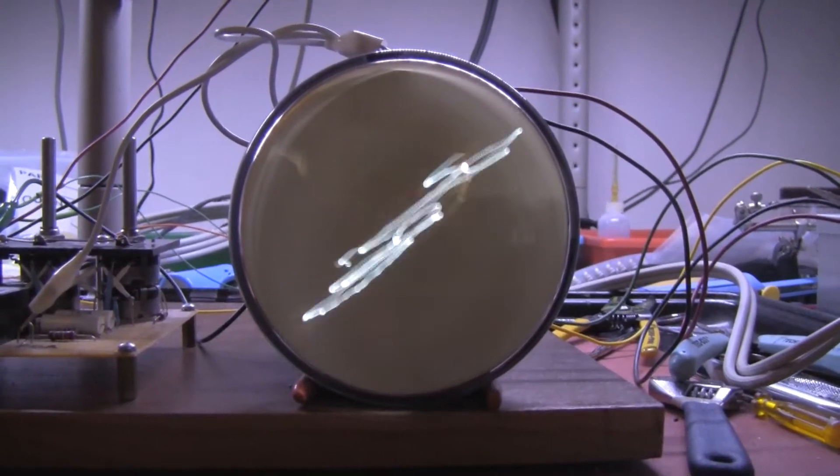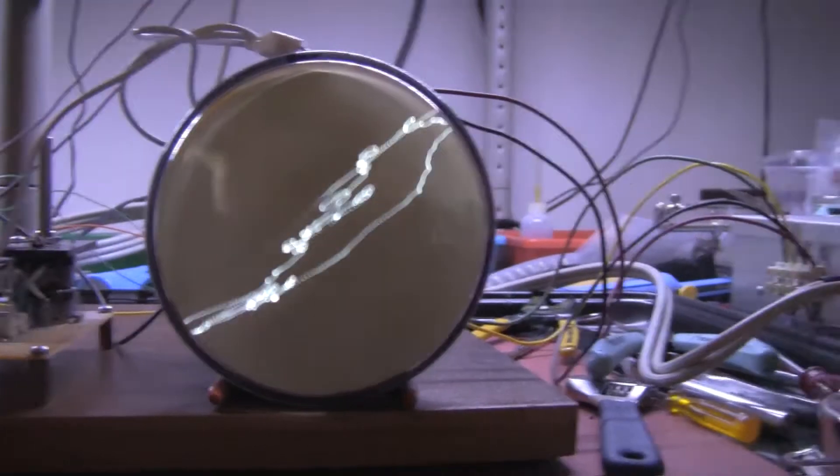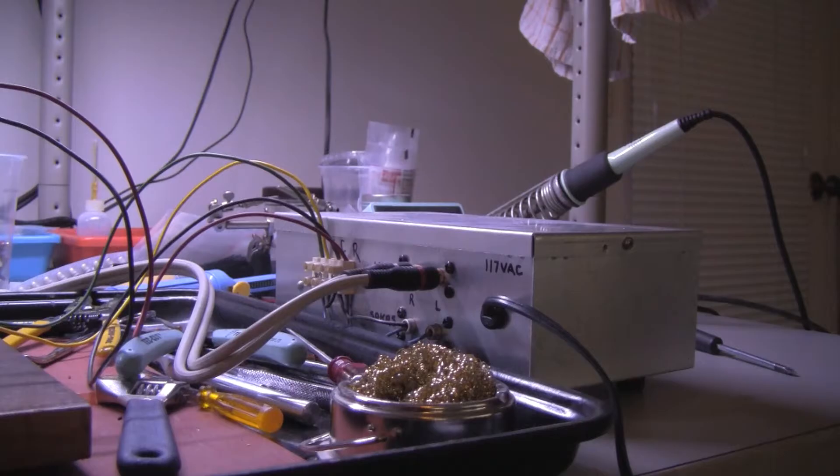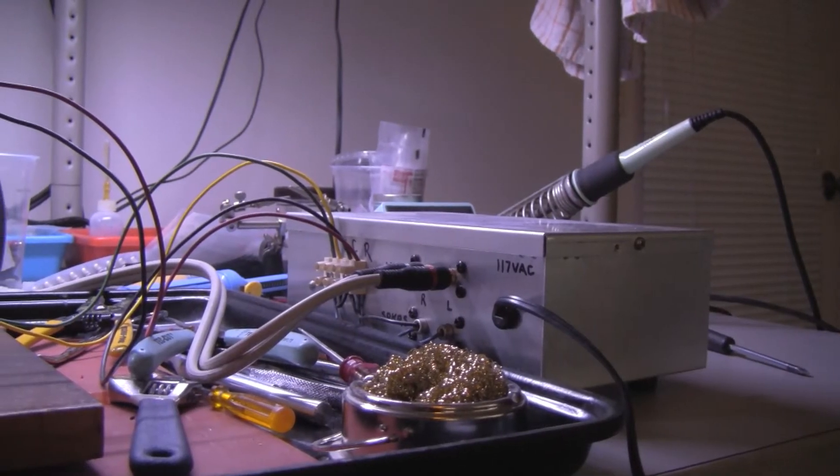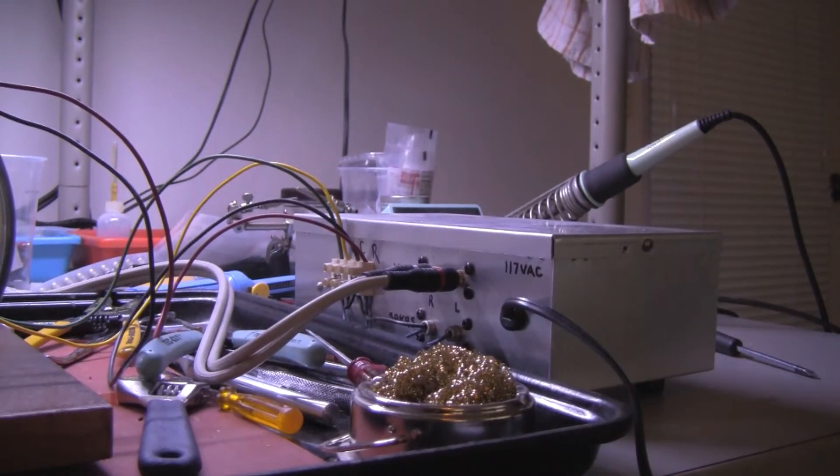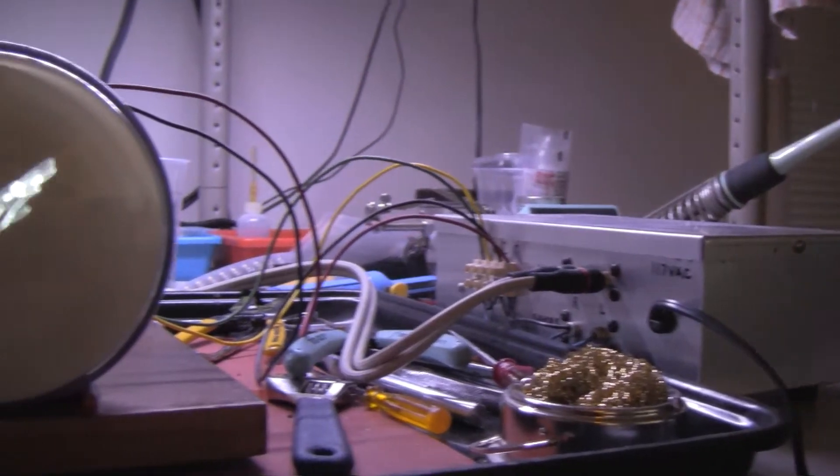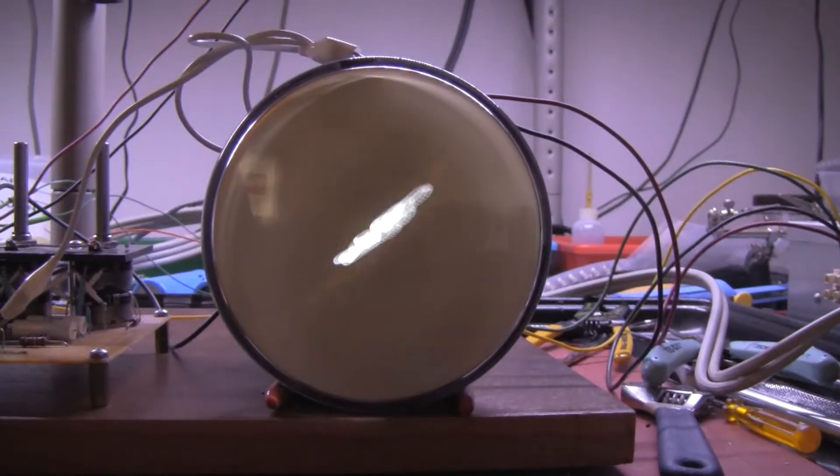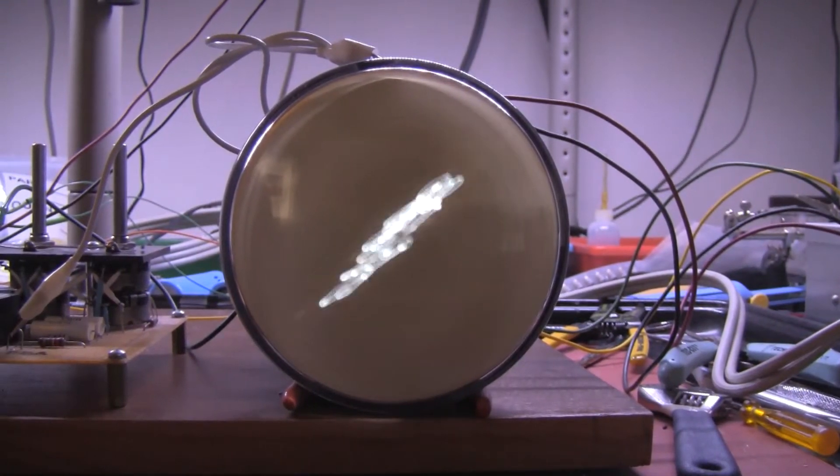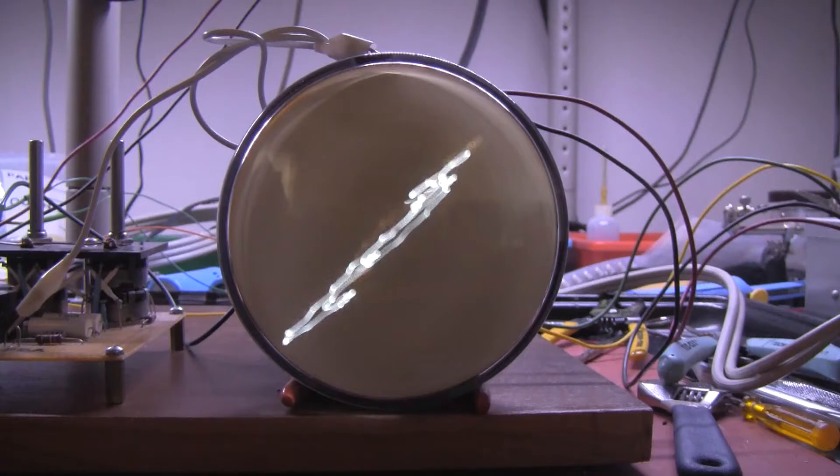At the moment, I'm driving the deflection yoke from the output of my stereo amplifier, which is getting its audio input from a DVD player that's playing some random stuff. We're showing the left and right channels on the screen here.